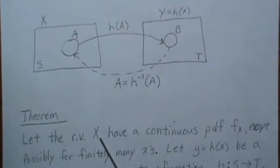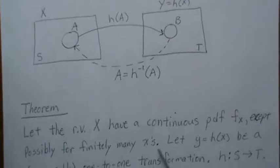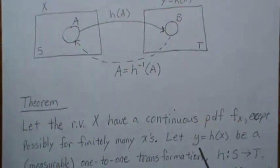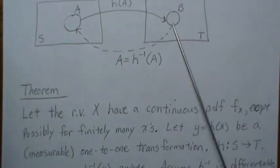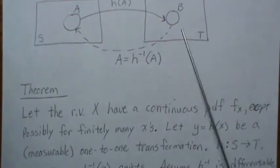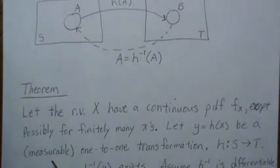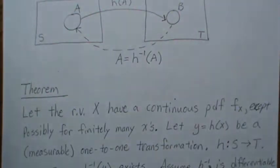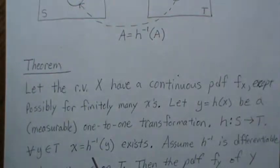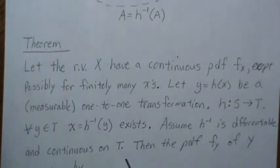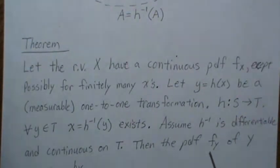So here in the theorem, we're going to let X be a random variable with a continuous PDF F of X, except possibly on finitely many X's. Let Y equal H of X be a measurable one-to-one transformation. Measurable just means sets here behave with sets there and vice versa — we can think of it as a one-to-one function going from S to T. So for every Y in T, there exists an X mapped to Y, expressed as the inverse function of Y equals X and H of X equals Y. We assume the inverse function is differentiable and continuous on T, and we want to find the PDF F of Y.